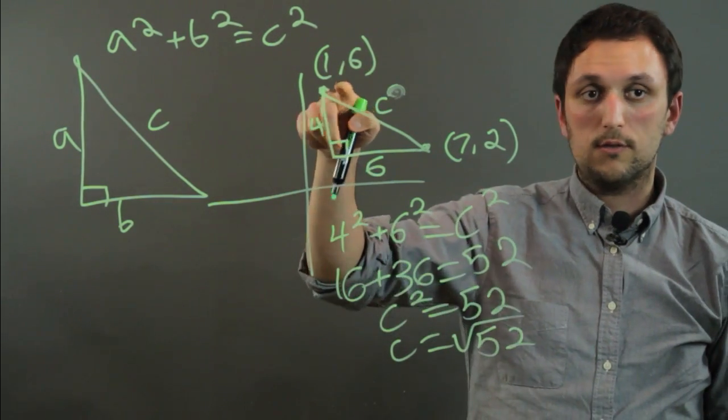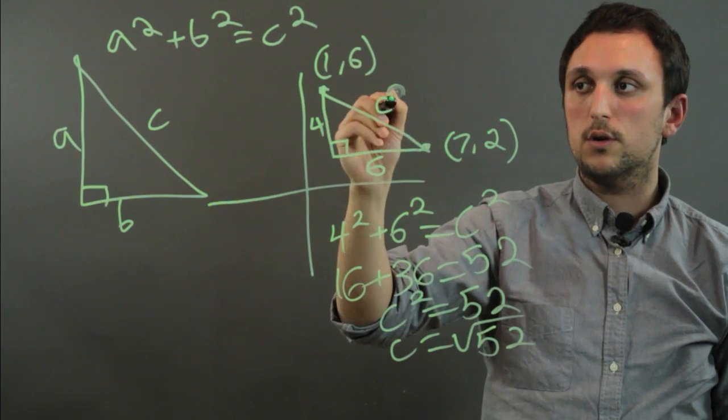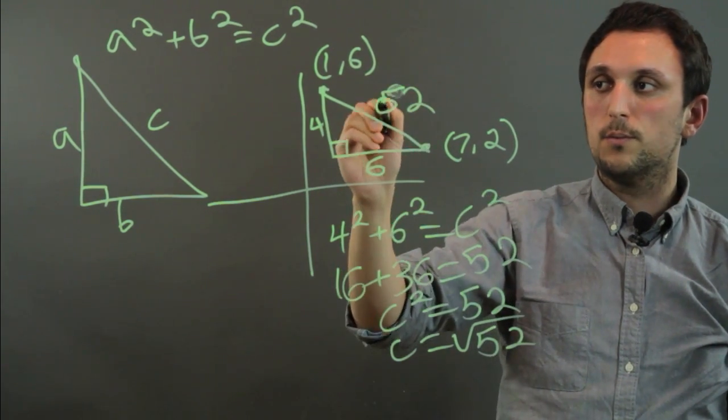So now we know how long it is or how far it is from 1, 6 to 7, 2. It's root 52.